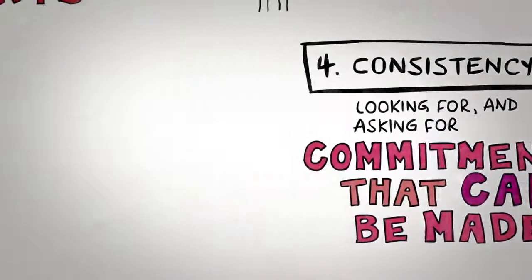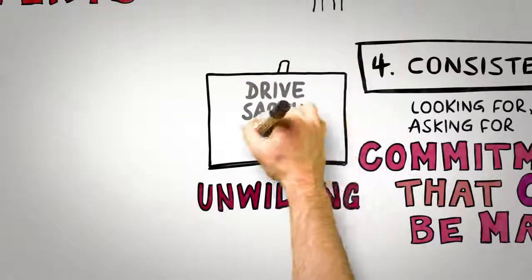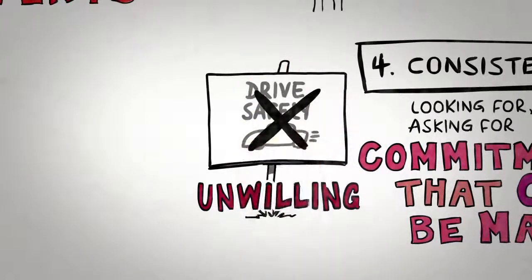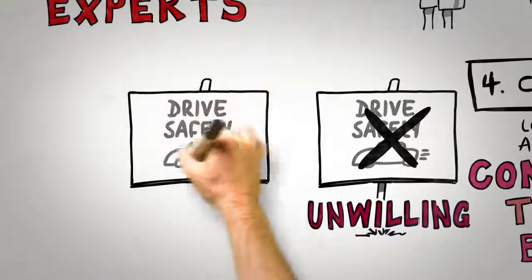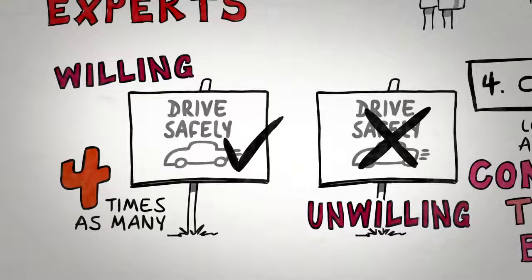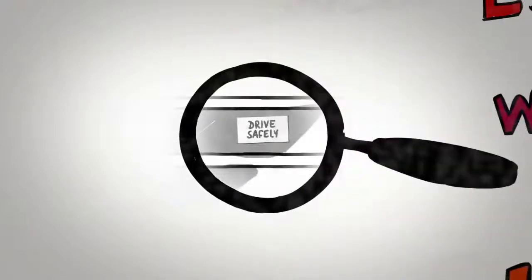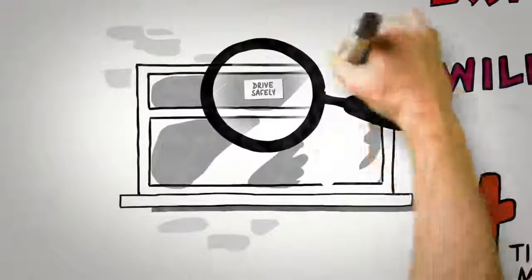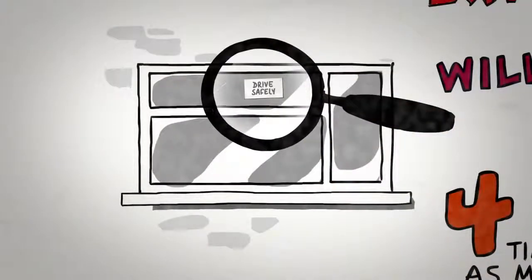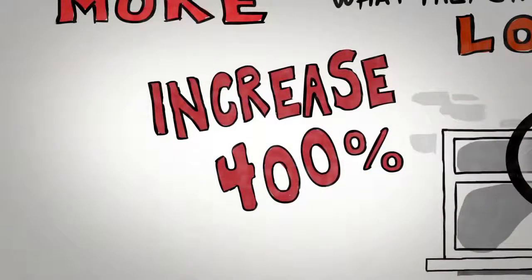In one famous set of studies, researchers found, rather unsurprisingly, that very few people would be willing to erect an unsightly wooden board on their front lawn to support a Drive Safely campaign in their neighborhood. However, in a similar neighborhood close by, four times as many homeowners indicated that they would be willing to erect this unsightly billboard. Why? Because 10 days previously, they had agreed to place a small postcard in the front window of their home that signaled their support for a Drive Safely campaign. That small card was the initial commitment that led to a 400% increase in a much bigger but still consistent change.